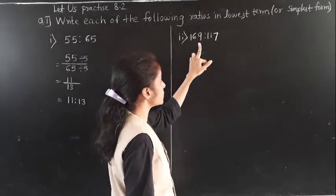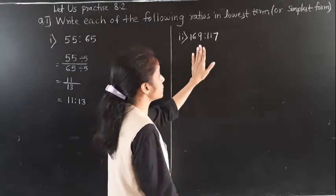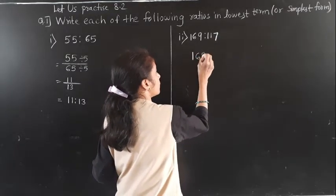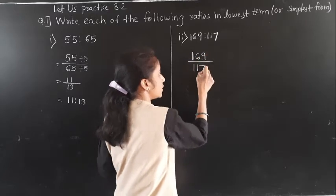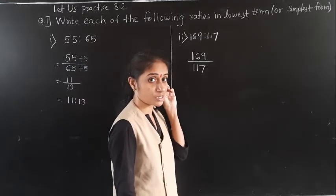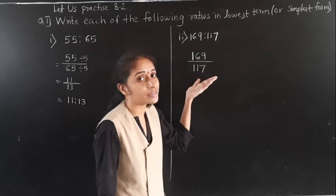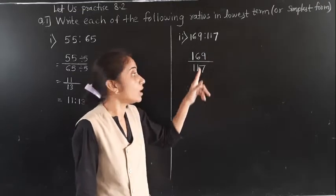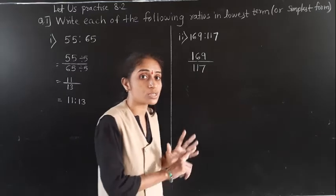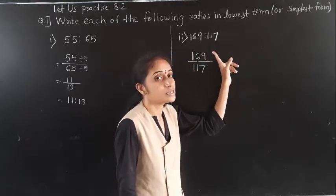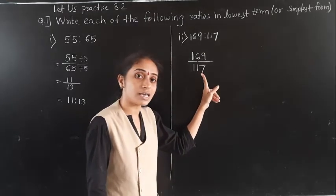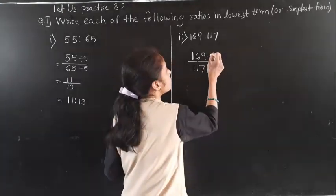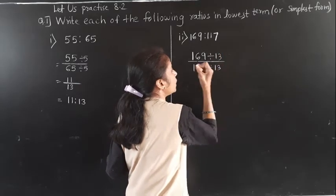Next example: 169 is to 117. Let's write this ratio as a fraction: 169 upon 117. Now 169 is the square of 13 — the square of 13 is 169. And 117 is in the 13 times table. So both numbers are divisible by 13. So let's divide by 13 for numerator and denominator.